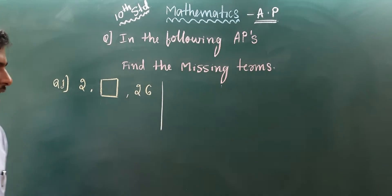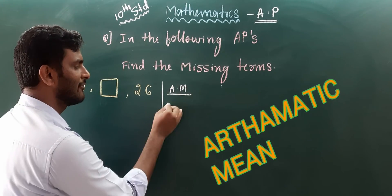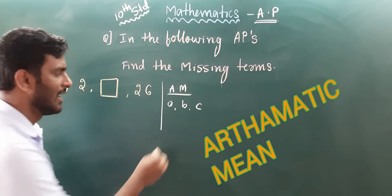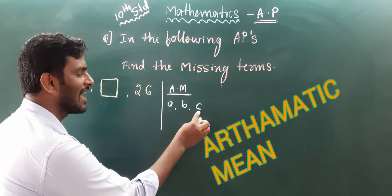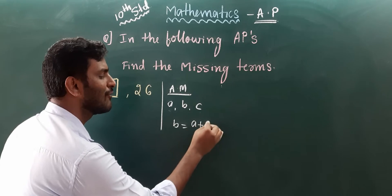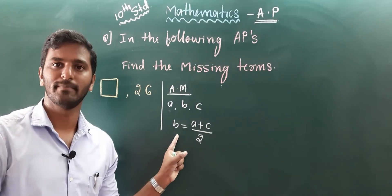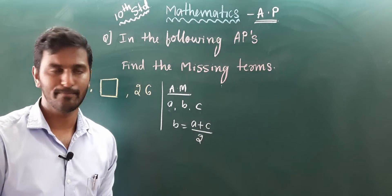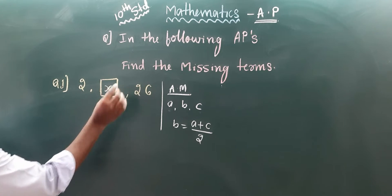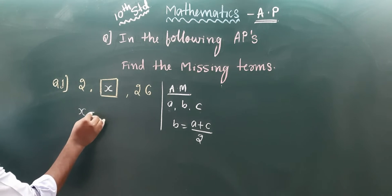The formula is the arithmetic mean. If a, b, c are three numbers in AP, then the middle number b is equal to the sum of the first and last numbers divided by 2. So let the middle number be x.